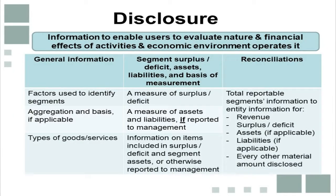On the disclosure of segment information, the key principle is that information must be presented enabling users to evaluate the nature and financial effects of the entity's activities and the economic environment it operates in. The first type is general information, which includes factors used to identify segments — such as lines of goods or services, geographical location, or regulatory environments — as well as the aggregation of segments and the basis used, and the types of goods and services.